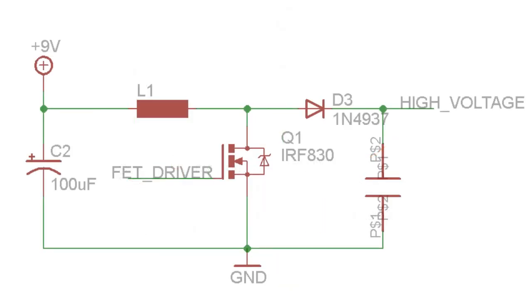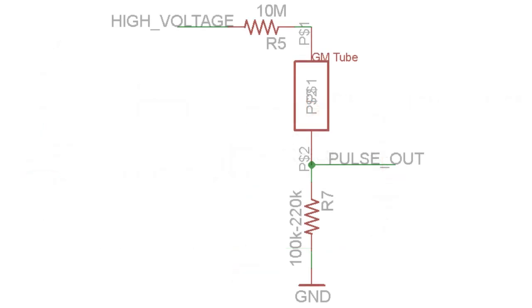This is how we adjust our voltage. Once we have a stable 400 to 450 volts, we connect that to the anode of the Geiger-Muller tube through a 10 megaohm resistor. The cathode of the Geiger-Muller tube is connected to a 100 to 220K resistor to ground.